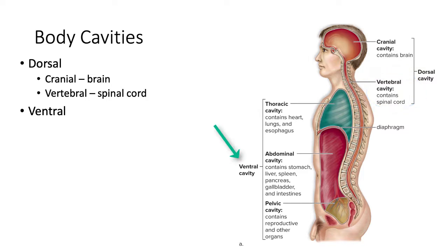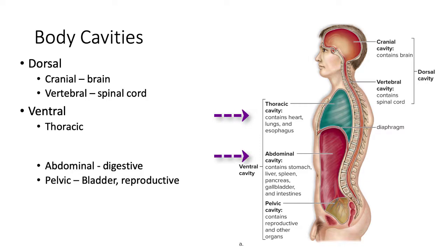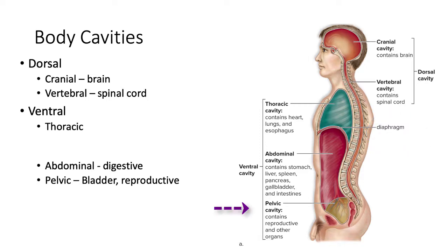The ventral cavity is also made up of several other cavities. The thoracic cavity is superior to the abdominal cavity, which contains the digestive organs. These two cavities are separated by the diaphragm. The pelvic cavity is the most inferior of the three cavities in the ventral cavity and contains the urinary bladder and the reproductive organs.